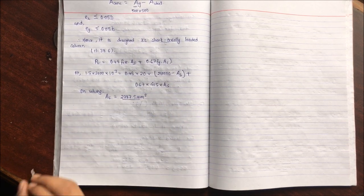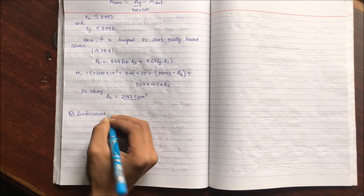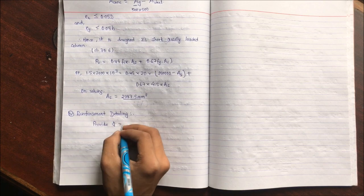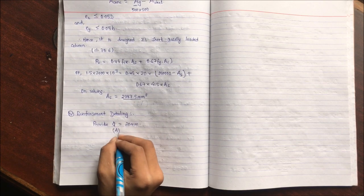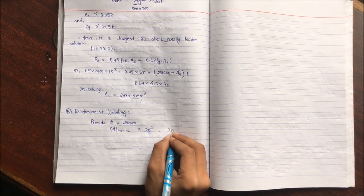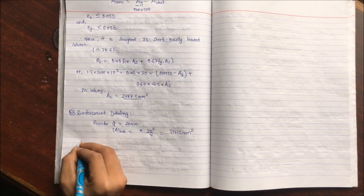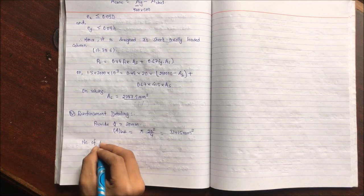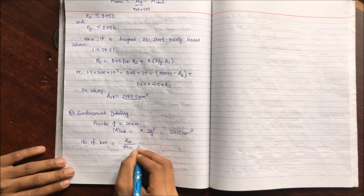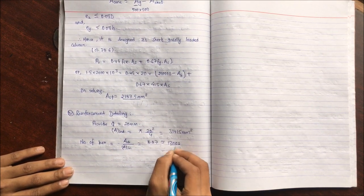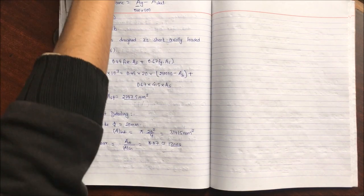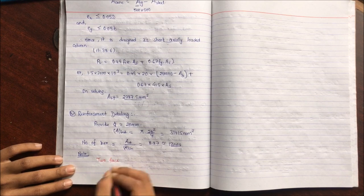Fourth step: reinforcement detailing. Providing 20 mm diameter longitudinal bars. Area of individual bar = π × 20² / 4 = 314.15 mm². Number of bars = AST / area per bar = 2787.5 / 314.15 = 8.87, rounded to 12 bars (next multiple of 4).